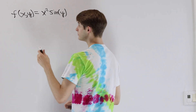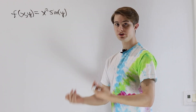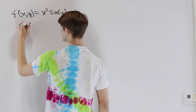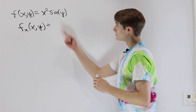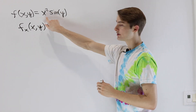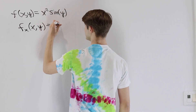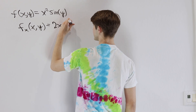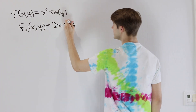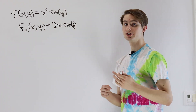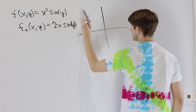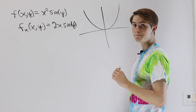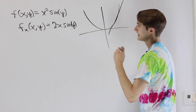We already know that if we want to take the partial derivative, for example with respect to x, we write f_x of x, y. We pretend that y is a constant and differentiate with respect to x, giving us 2x times sin(y). We can interpret this graphically just like an ordinary derivative, where we slice the graph — in this case it looks like a parabola — and take the slope of the tangent line.